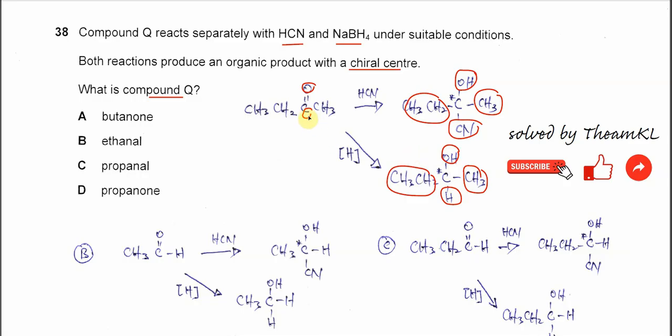So when butanone reacts with HCN and sodium borohydride, it can form chiral compounds. This means A is the answer.